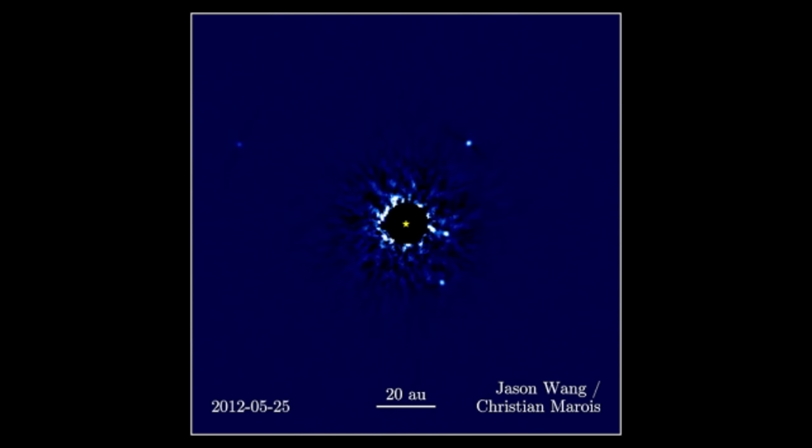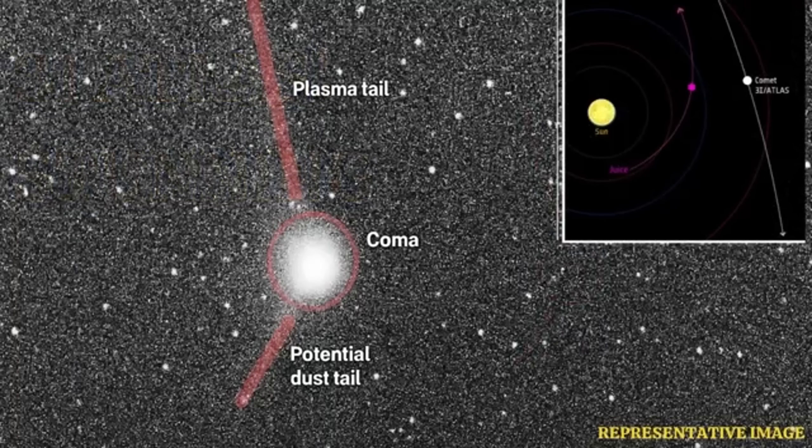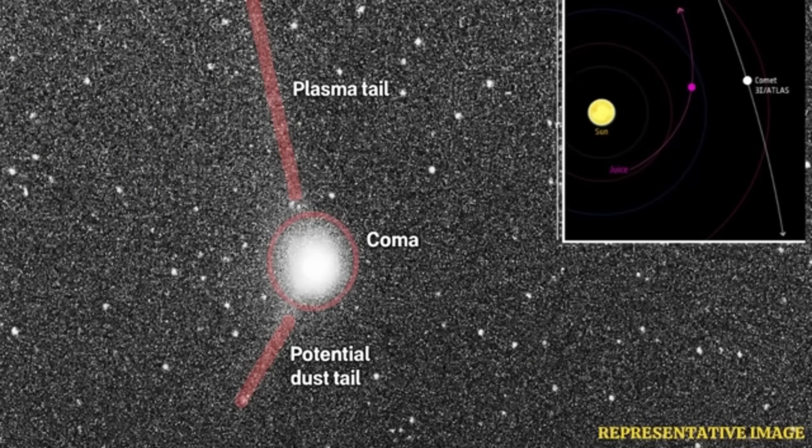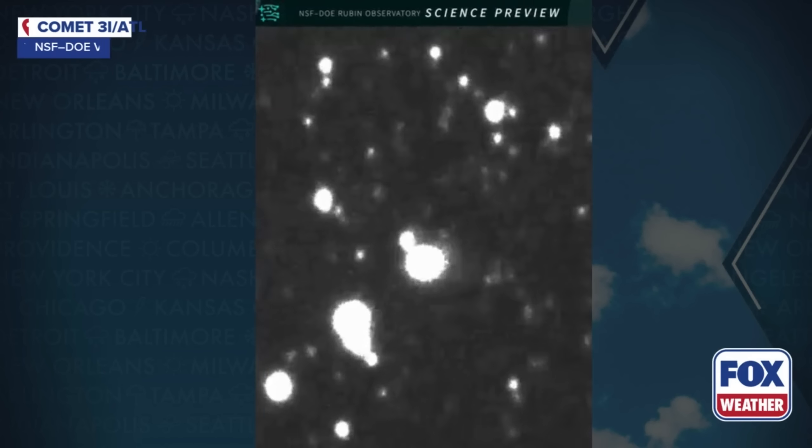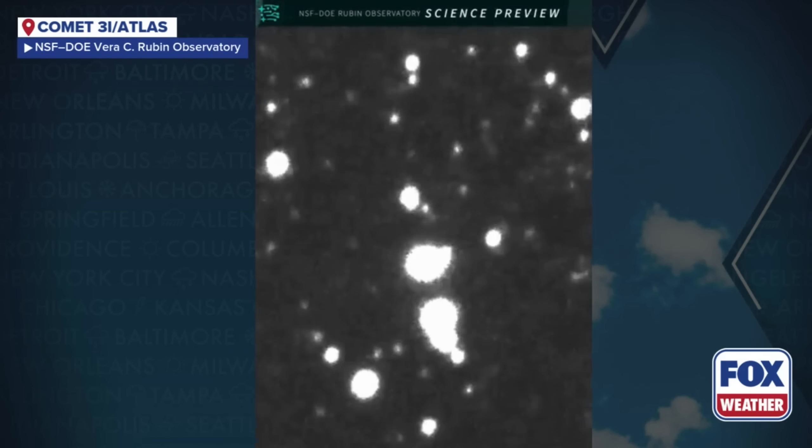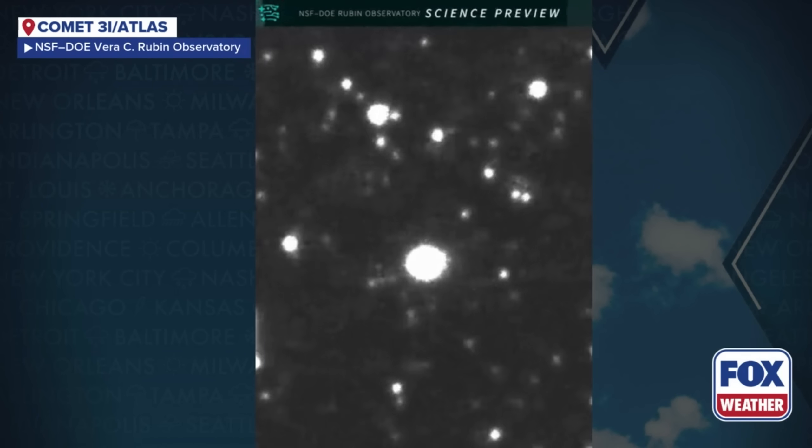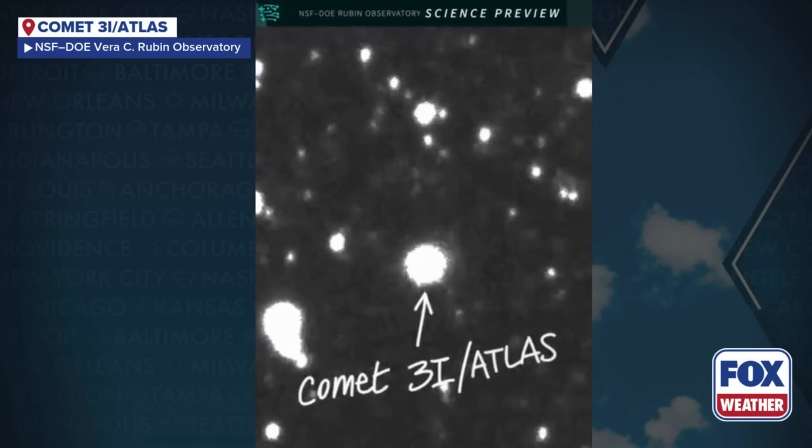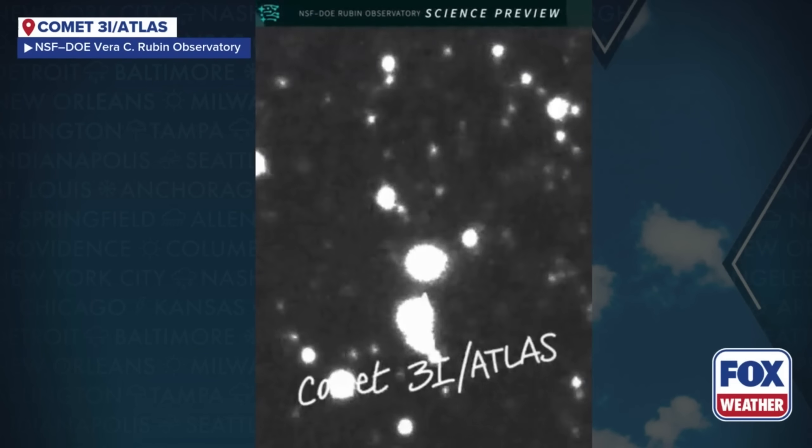But these are just theories. The most immediate and terrifying possibility remains the most direct one. Maybe the object itself is just a transport. What if its goal is to get close to Earth and release its cargo? A fleet of smaller, faster probes. The original trajectory, which seemed to avoid us, now feels like a calculated deception. It passed by the outer planets, perhaps gathering data, and only when it had a clear final run at the inner solar system did it reveal its true intent. It waited until it was too close for us to do anything about it.